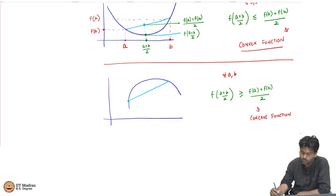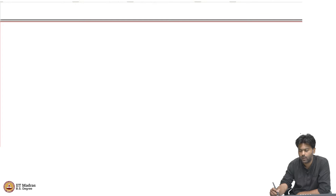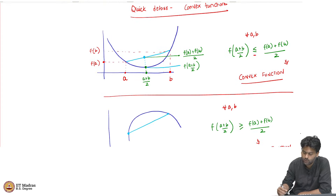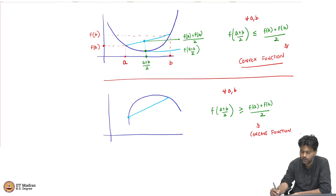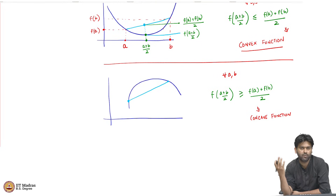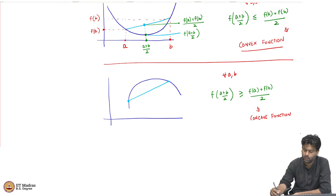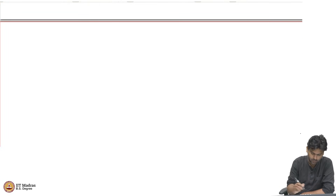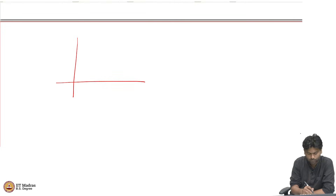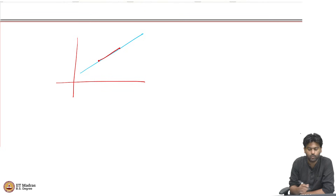An immediate question is: are there functions which are both convex and concave? Well, if you look at the definition, it says less than or equal to and greater than or equal to, which means that if there is a function where the inequalities are actually equalities, then it is both convex and concave. That means f((a+b)/2) = (f(a) + f(b)) / 2 for all a and b. What function satisfies that? A linear function — if you divide the input by 2, the output also gets added and divided by 2. So a linear function is both concave and convex.